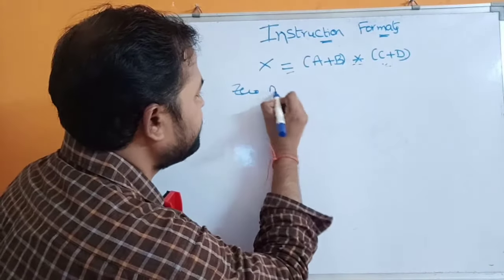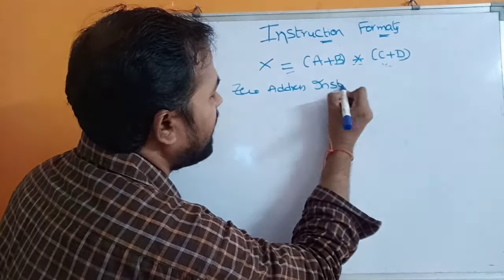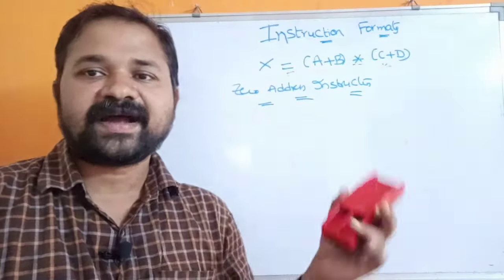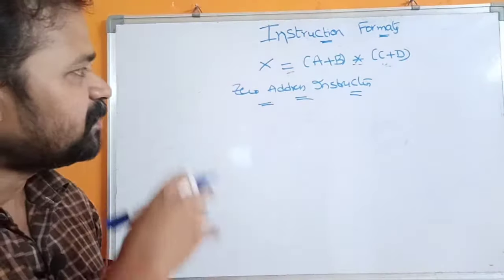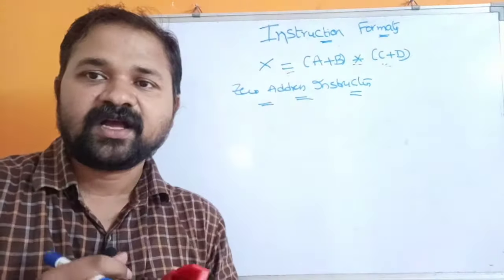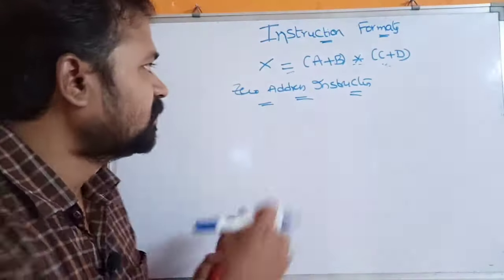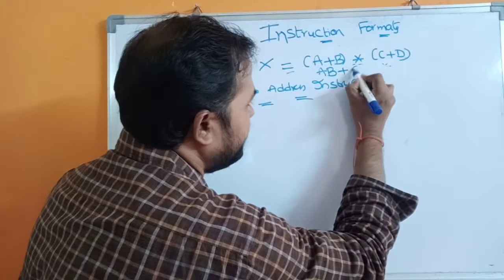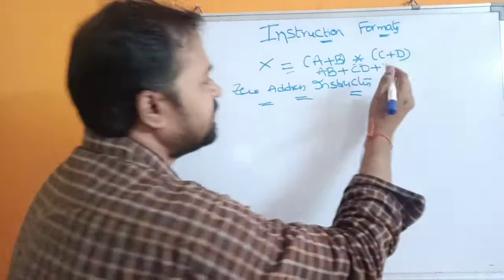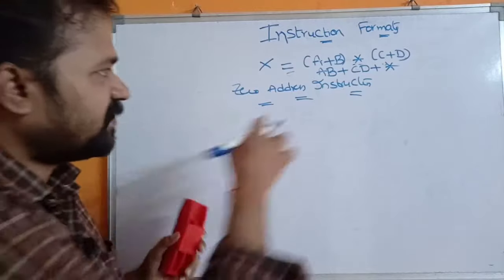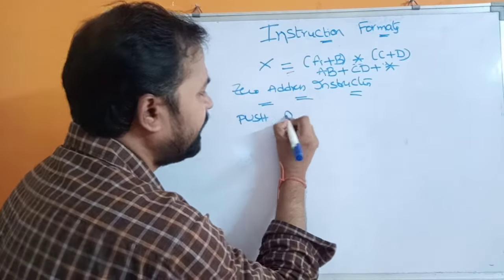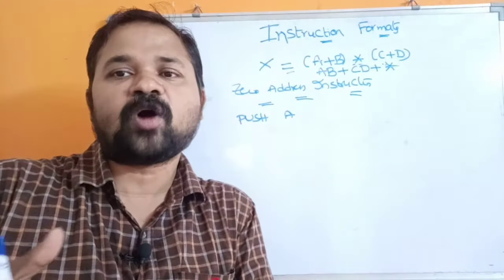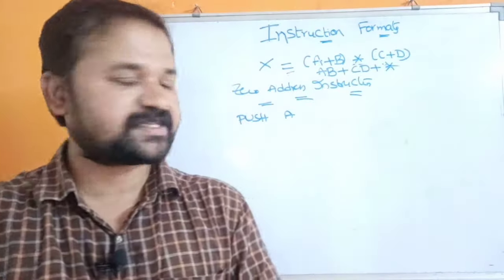For zero-address instruction, we use a stack with PUSH, POP, and arithmetic instructions. First, convert the expression to postfix notation: a b + c d + *. If it is an operand, push it onto the stack. If it is an operator, pop the topmost two operands, perform the operation, and push the result onto the stack.